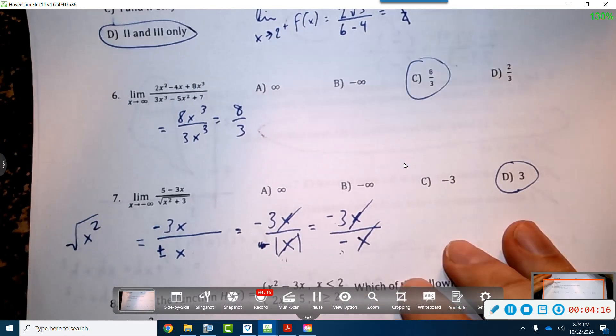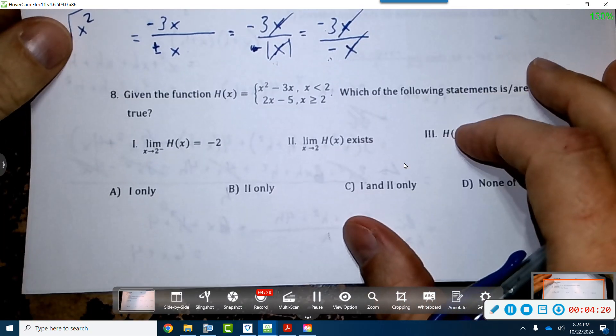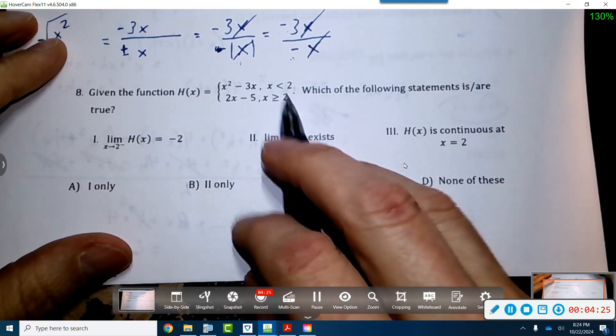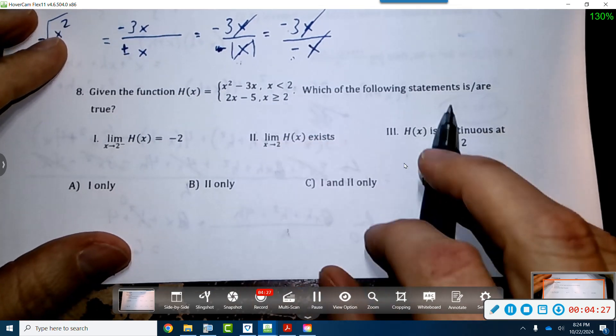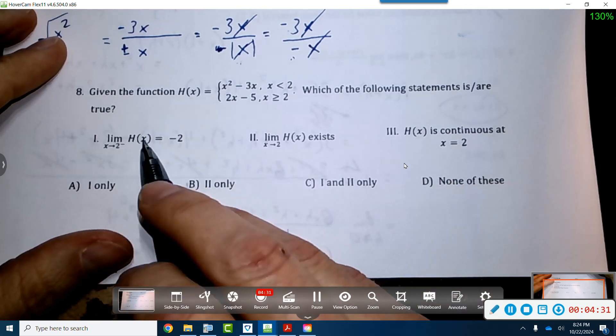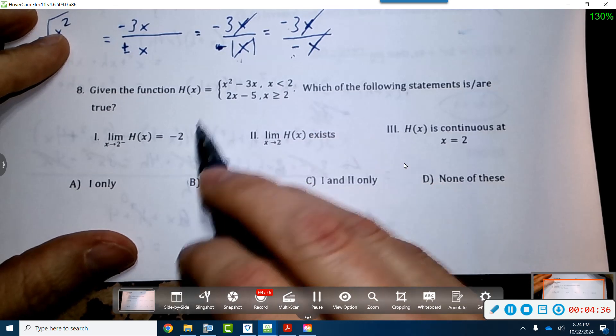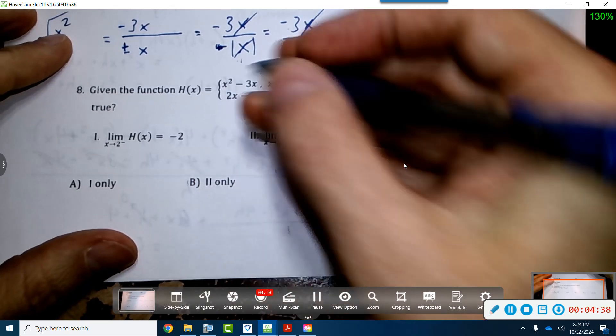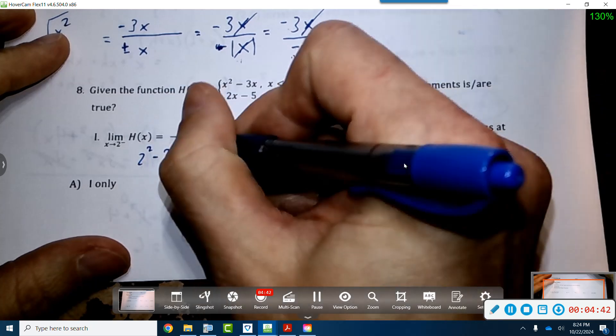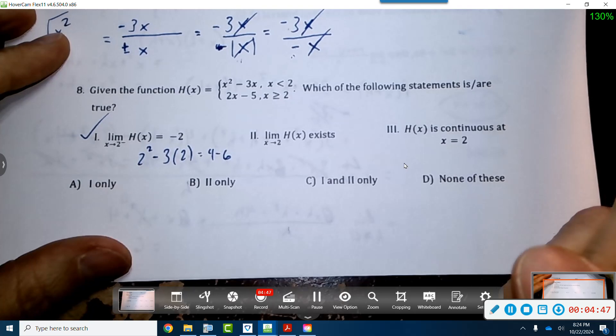All right, so this one actually I did not do. Are we still recording? We're recording. Yes, okay. So number 8, given this function h(x), looks like we're broken at 2. Which of the following statements is or is not true? So let's see. We're coming from the left of 2, which is this guy. So let's plug in a positive 2: 2 squared minus 3 times 2. Looks like we get 4 minus 6 is negative 2. That guy's true.